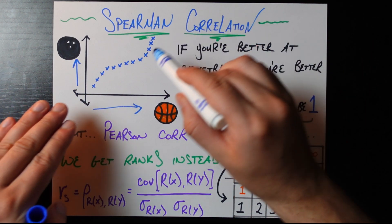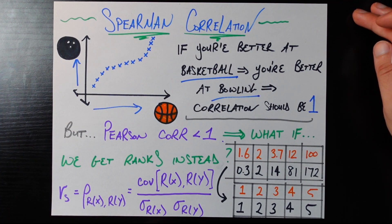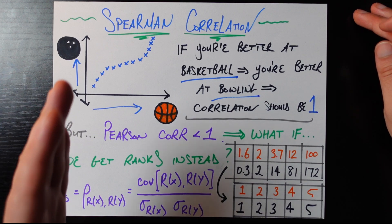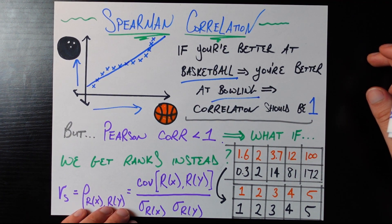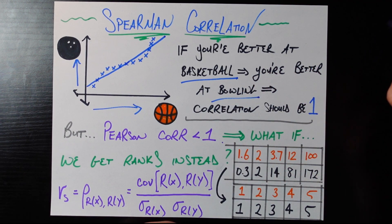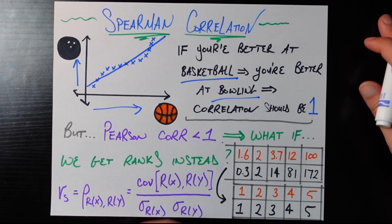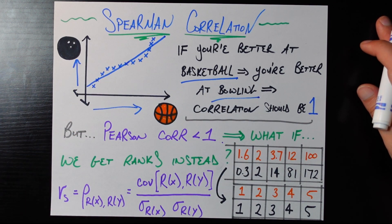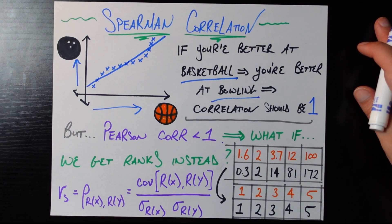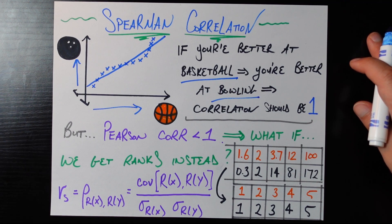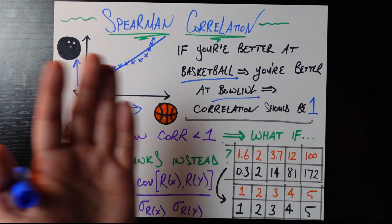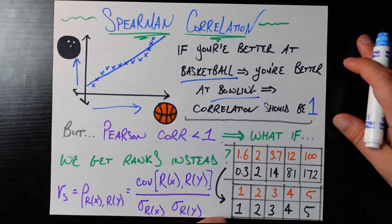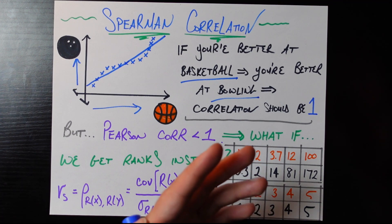But going back to the statistical definition of correlation, visually that means all points lie on a straight upward-sloping line — and this S-curve clearly is not that. There is a positive trend, but because Pearson correlation measures the strength of the linear relationship, it will be less than one. It will give a sub-optimal score, noting there's noise relative to a perfect linear fit. So we're at a paradox: we want perfect correlation, but Pearson gives us less than one. All we care about is whether someone better at basketball is guaranteed to be better at bowling — and that is the case here. That's where Spearman correlation comes in.